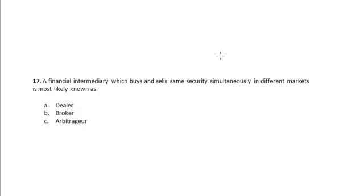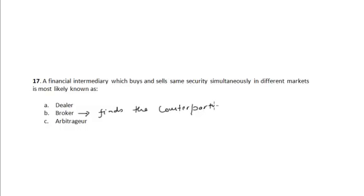A financial intermediary which buys and sells the same securities simultaneously in different markets is most likely known as? A broker stands between the buyer and the seller of the same security at the same location and time. The broker finds the counterparty to the investor and stands between the buyer and seller of the security at the same time and at the same location.